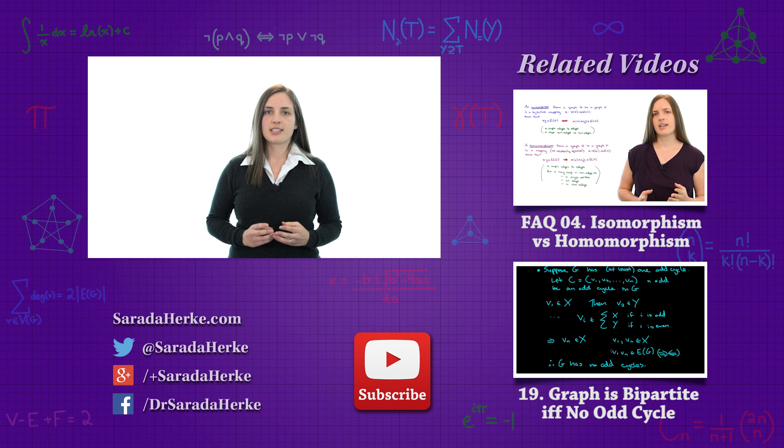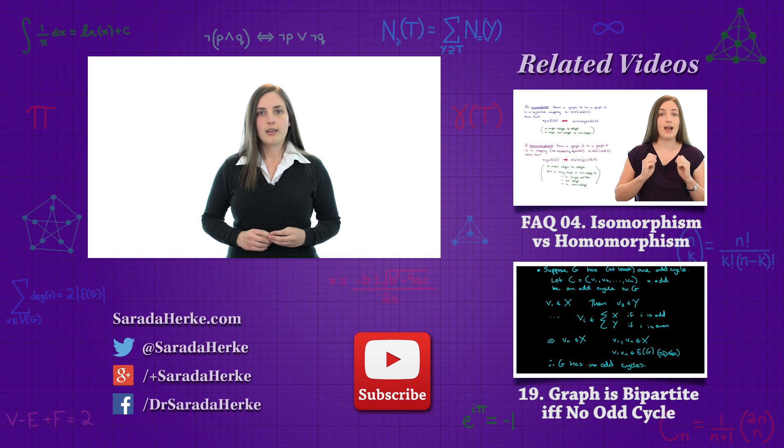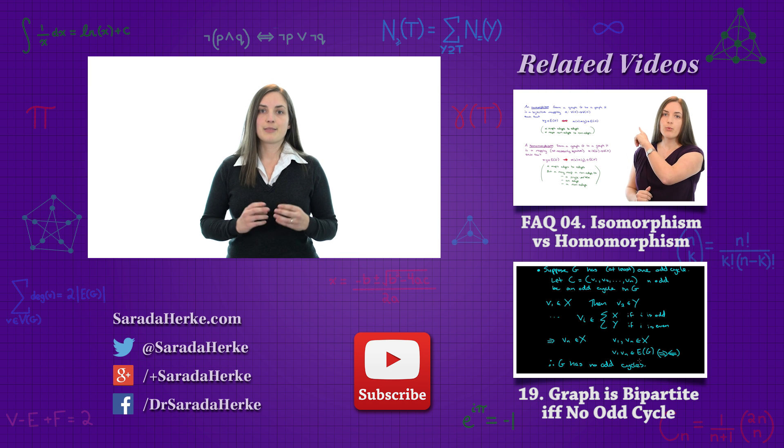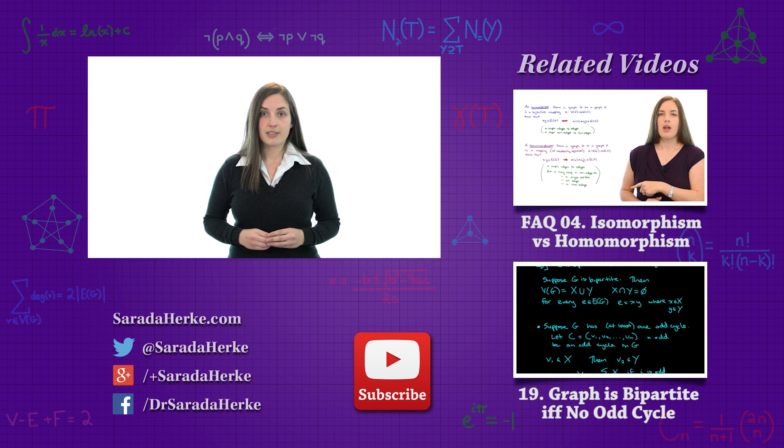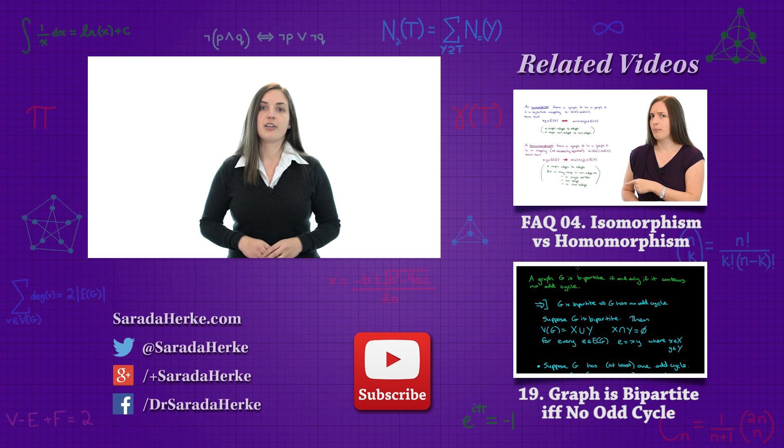So you should remember this as a fairly intuitive fact, that a graph which has chromatic number 2 is bipartite, and if a graph is bipartite then of course it can be colored in two colors.